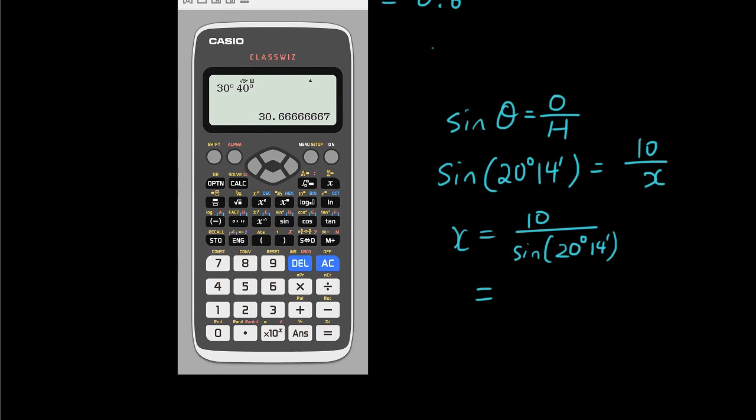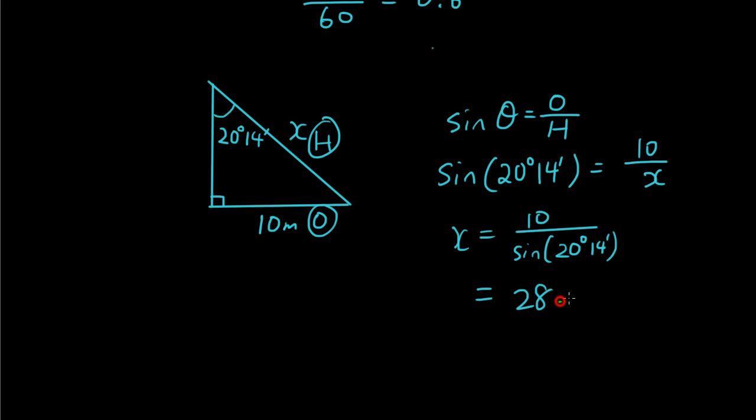And now I can just type that into the calculator. So 10 divided by bracket, sine bracket, 20 degrees, 14 minutes, bracket, bracket, equals 28.9 meters. I hope that's the right answer. Thanks for watching the tutorial, guys. See you next time.